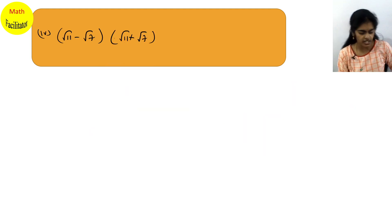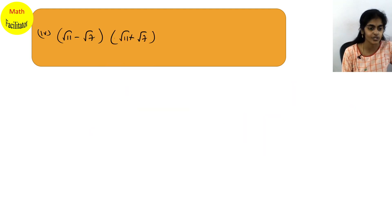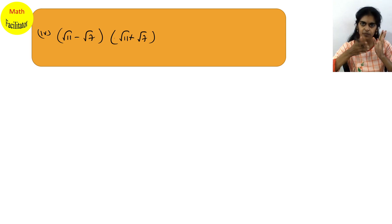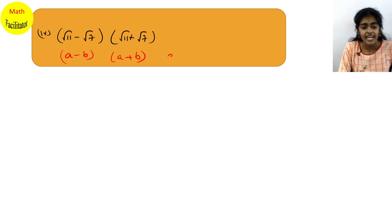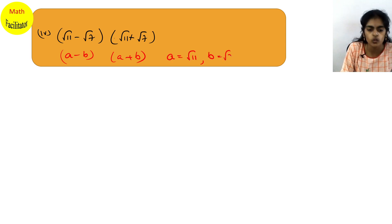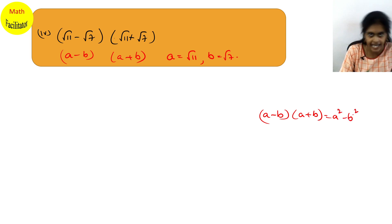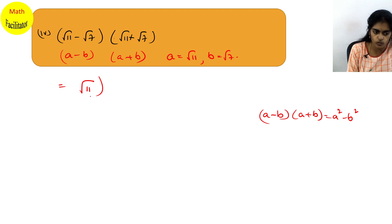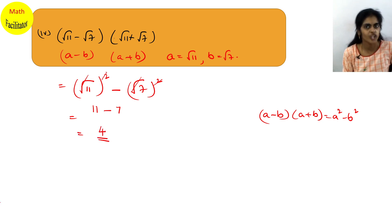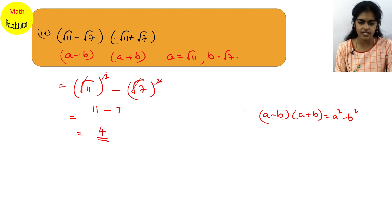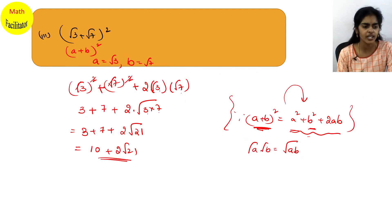Next question: (√11 - √7)(√11 + √7). Again this is in the form (a-b)(a+b) = a² - b², where a = √11 and b = √7. So (√11)² - (√7)² = 11 - 7 = 4. So simple! All these formulas are from your lower classes; you're just applying them again.